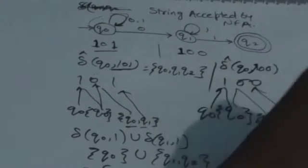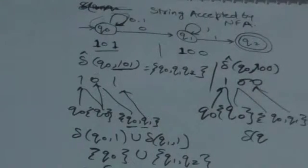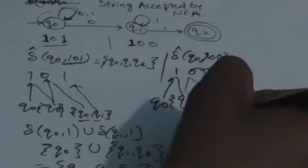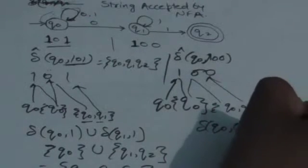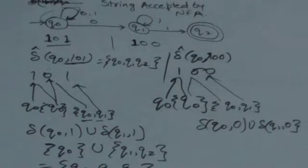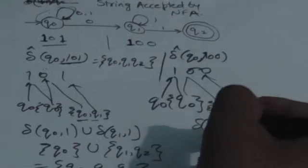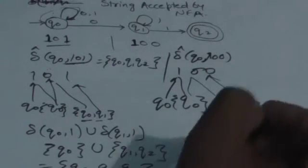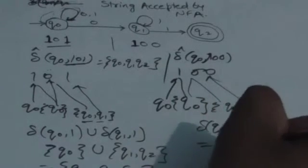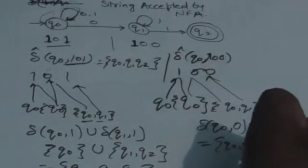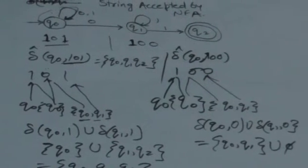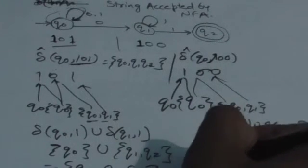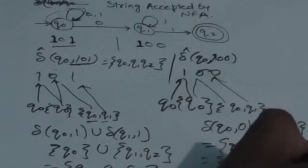Now it has to read the third input symbol 0. Apply 0 to both states: when you apply 0 to Q0 the output is {Q0, Q1}; when you apply 0 to Q1 the output is the null set — meaning the set has no elements. Taking the union of both, the output is {Q0, Q1}.